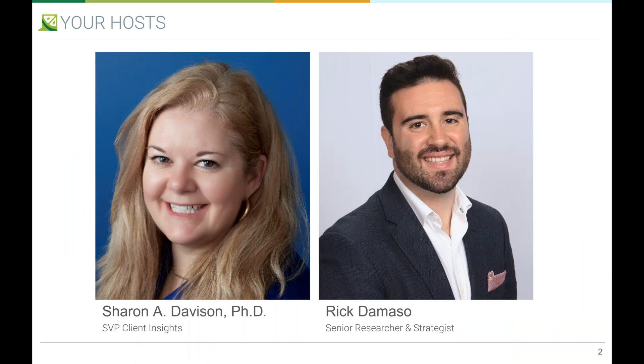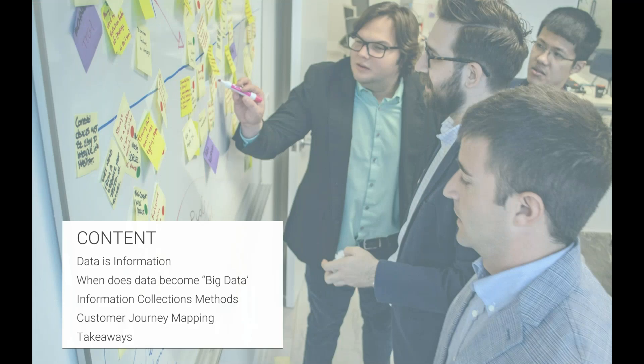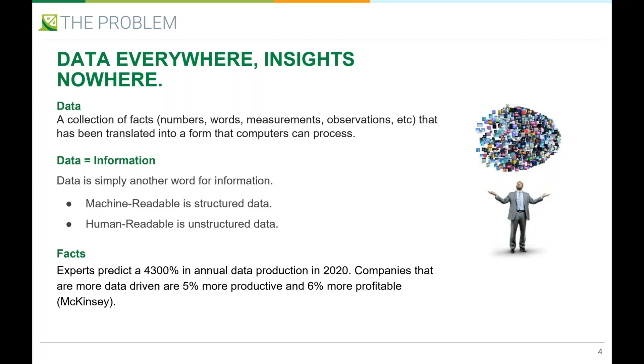I'm Sharon on the left, Rick is on the right. What we're going to talk about today is data as information — what does data become, how does it become big data, information collection methods, customer journey mapping, and takeaways. Some of you may be new to customer journey mapping, or you may be very familiar with it. We're just talking about what happens with data.